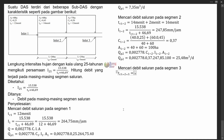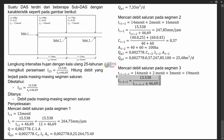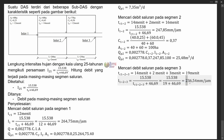Terakhir, kita mencari debit saluran pada segmen 3. Caranya sama — segmen dianggap satu kesatuan. Tadi waktu konsentrasi sampai di inlet 2 adalah 16 menit. Kita tambahkan waktu konduit dari inlet 2 ke inlet 3 sebesar 3 menit, sehingga waktu konsentrasi total adalah 19 menit. Dengan TC = 19 menit, kita mencari intensitas hujan dan memperoleh I3 = 236,54 mm per jam.